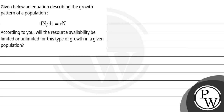Hello, kids. Let us read the question. The question says, given below is an equation describing the growth pattern of a population. The equation is dN by dt, which is equals to rN. According to you, will the resource availability be limited or unlimited for this type of growth in a given population?